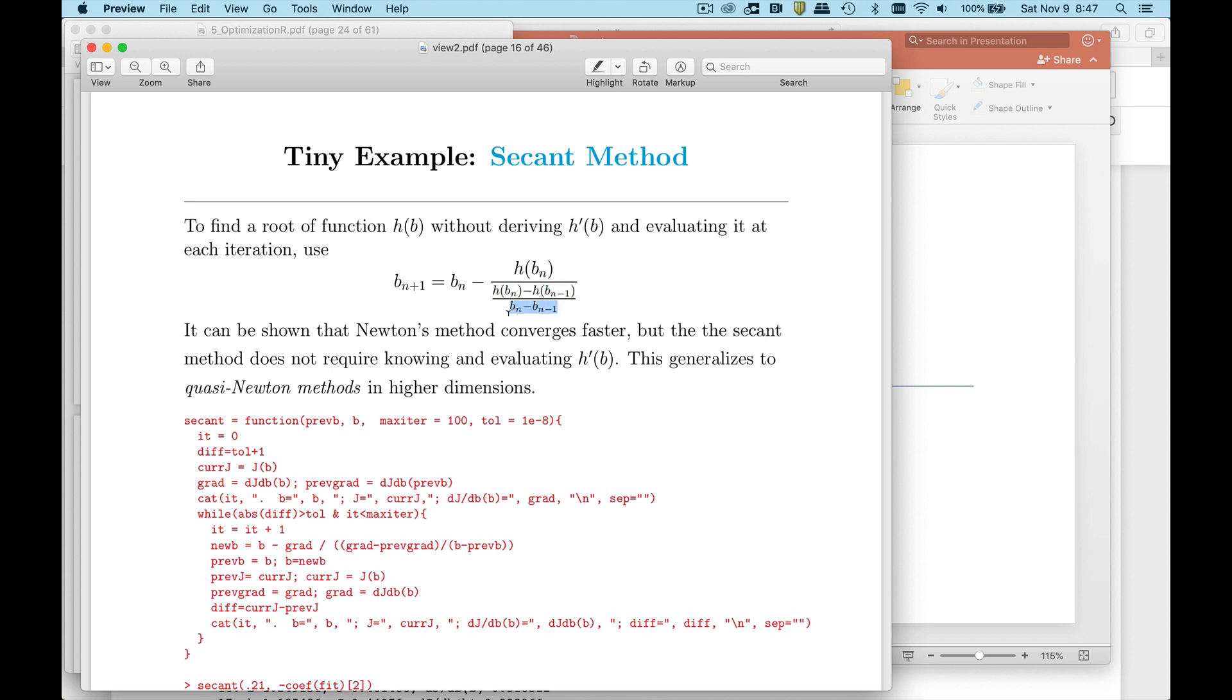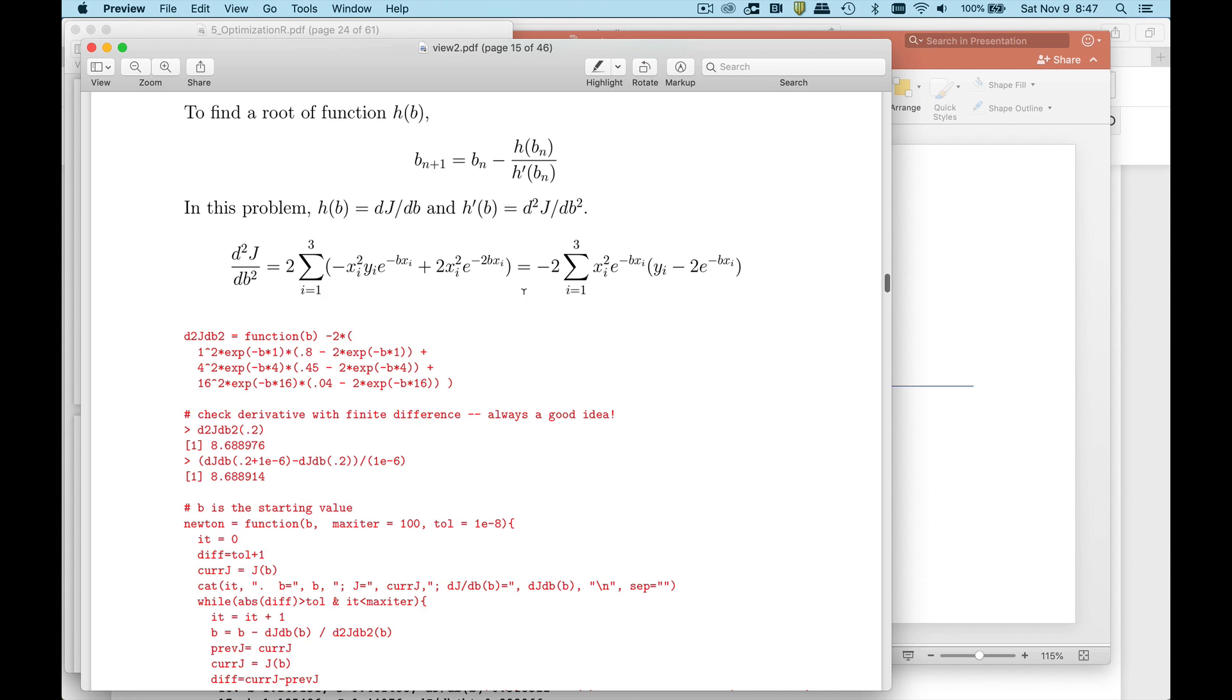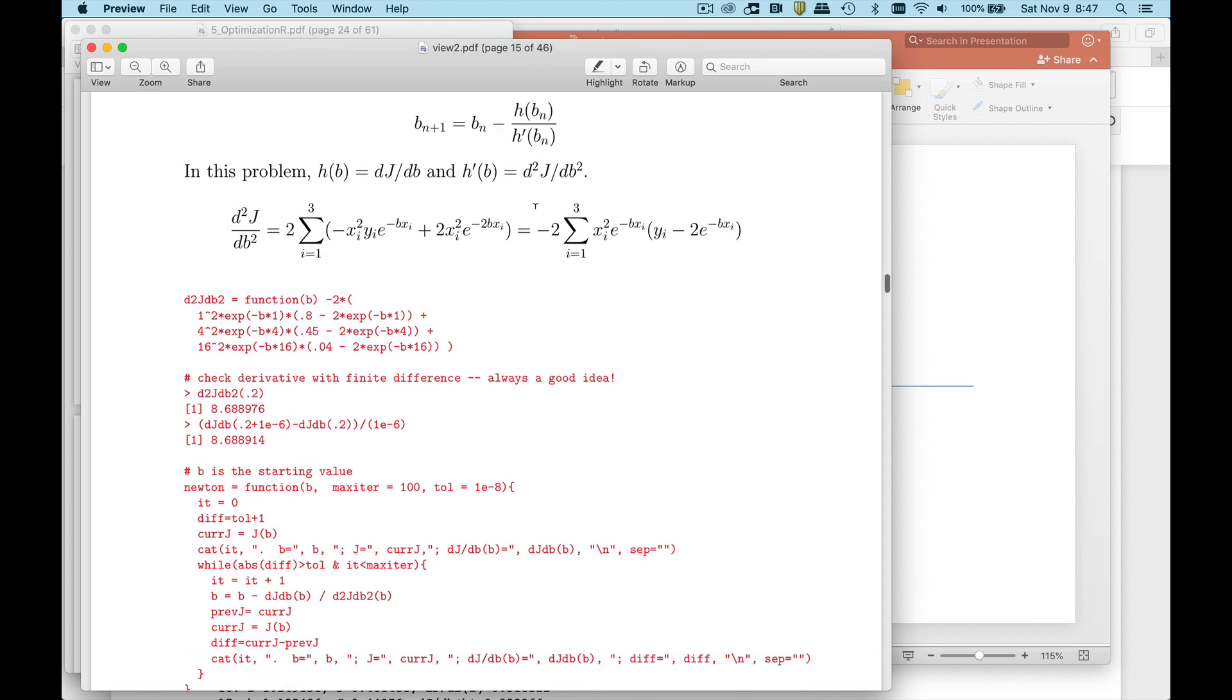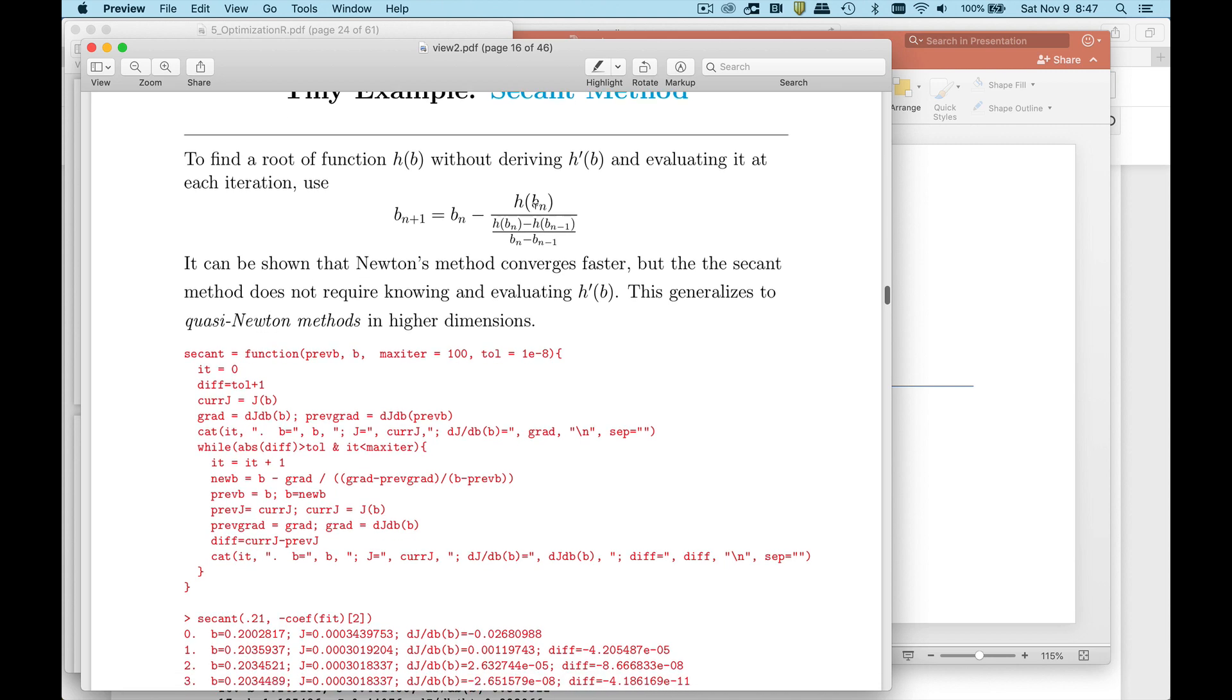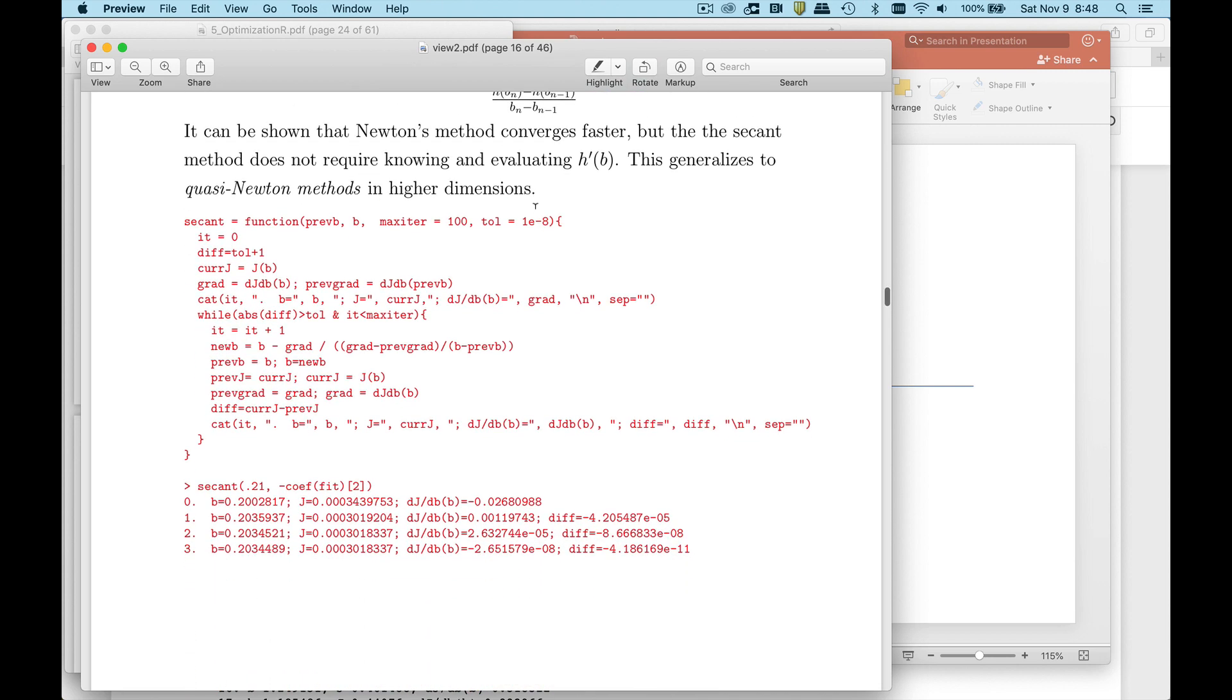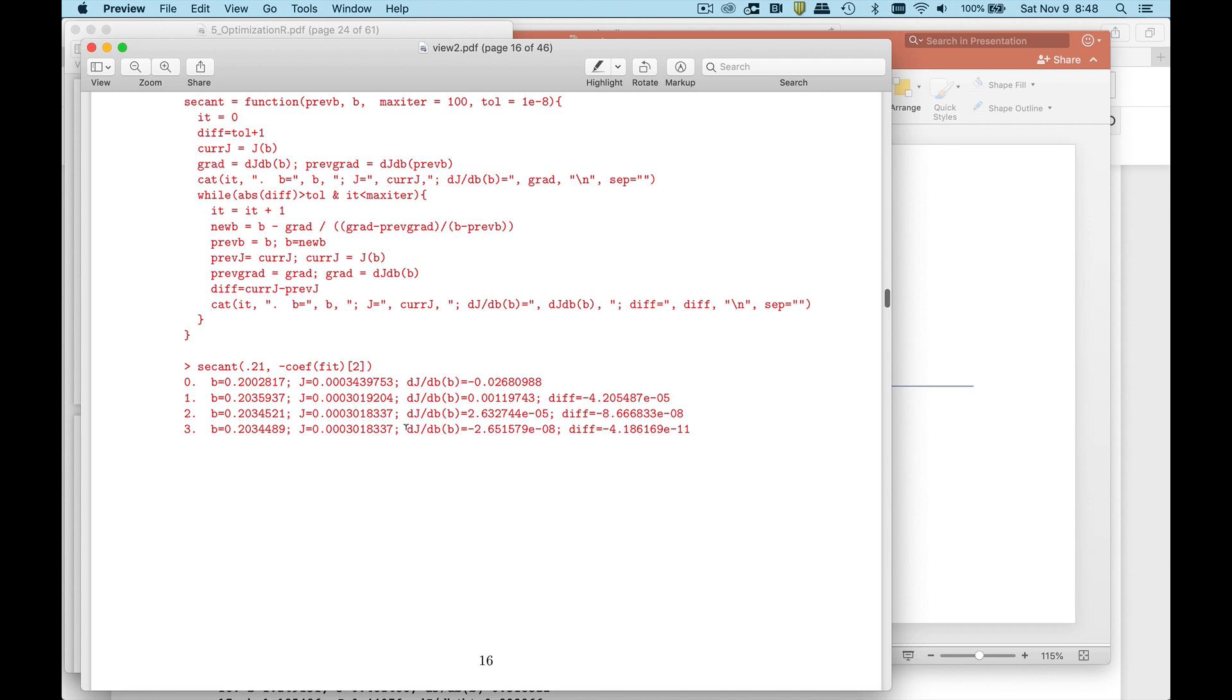In the denominator we have the run. So you can think of this as just kind of a finite difference approximation to this second derivative. That's called the secant method. The key point with this is I don't need the second derivative of the cost function and that saves me some work. Notice we get convergence in about three iterations to the same value.